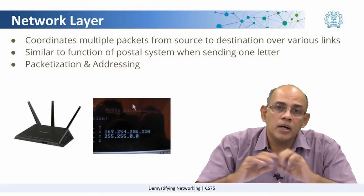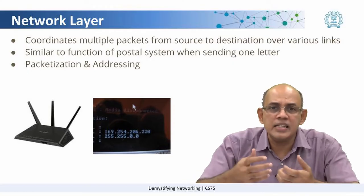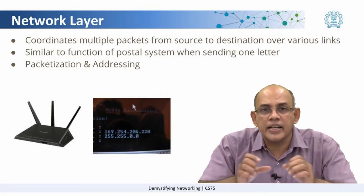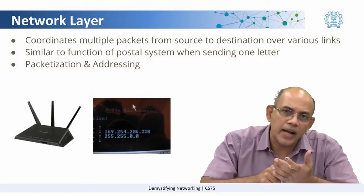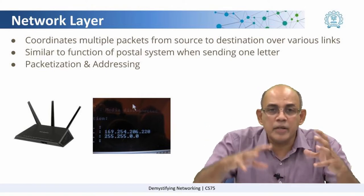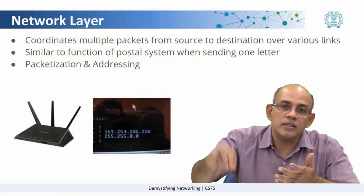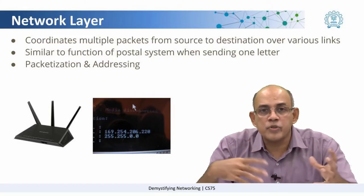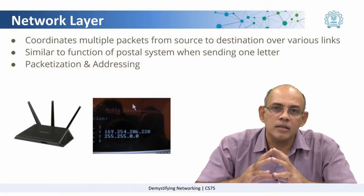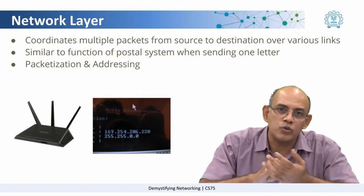Above the link layer, it cannot be that everything is just one link. We need the notion of having multiple links connected with each other to form a network. A packet has to go from a source at one end of the network to a destination at another end, with multiple links in between — links over wireless, under the sea, or over different types of physical media. So we need the routing layer, or network layer, to make sure the packet goes from source to destination.